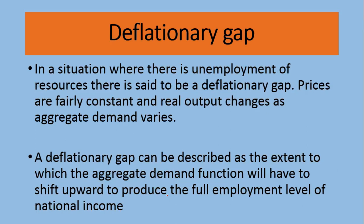Exactly the opposite situation is known as the deflationary gap. In a deflationary gap, there is unemployment of resources — resources that are not being utilized. Prices are fairly constant and real output changes as aggregate demand varies. Here, aggregate demand is less than aggregate supply.